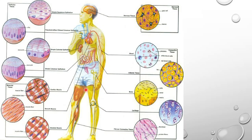Epithelial tissue is divided into simple and compound. Simple is further divided into squamous, cuboidal, columnar, and ciliated. There is also glandular epithelial tissue. Connective tissue is divided into loose — areolar and adipose — dense — ligaments and tendons — and specialized — bone, cartilage, and blood. Muscle tissue includes cardiac, skeletal, and smooth muscles. Nervous tissue comprises neurons and glial cells. That is all about structural organization in animals. Thank you.